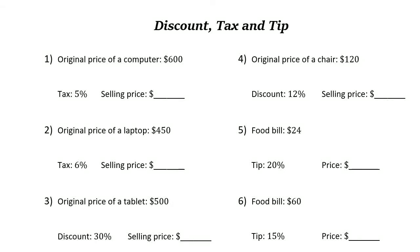Discount, tax, and tip problems are similar to percent problems. Let's take a look at some examples. This one says the original price of a computer is six hundred dollars and the tax is five percent, which means you need to add five percent to this price.